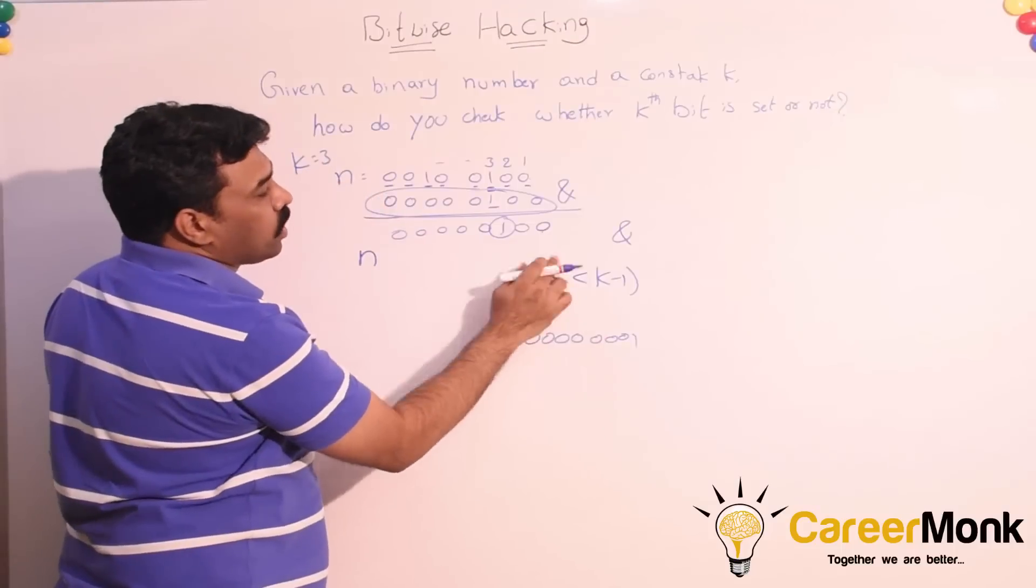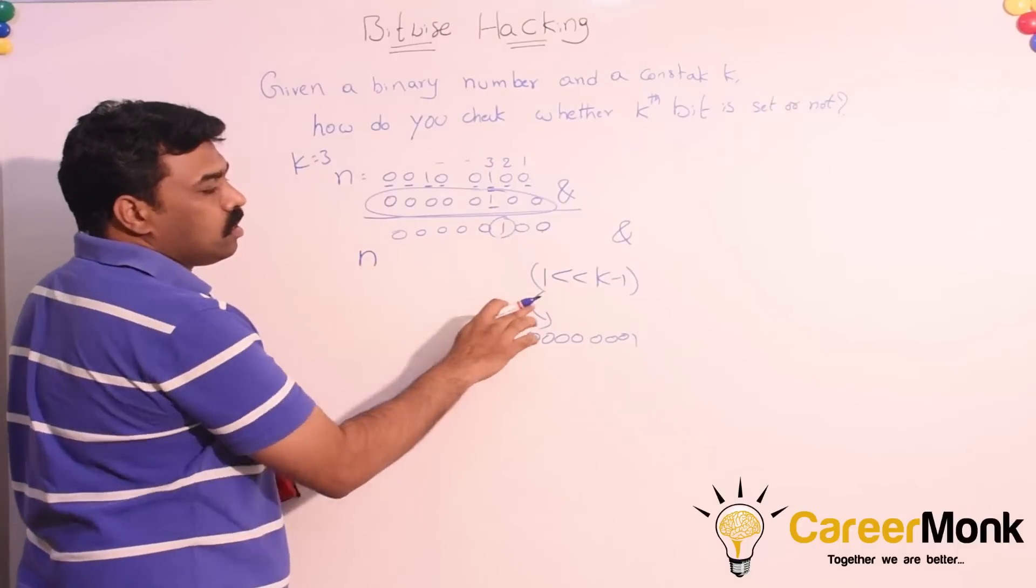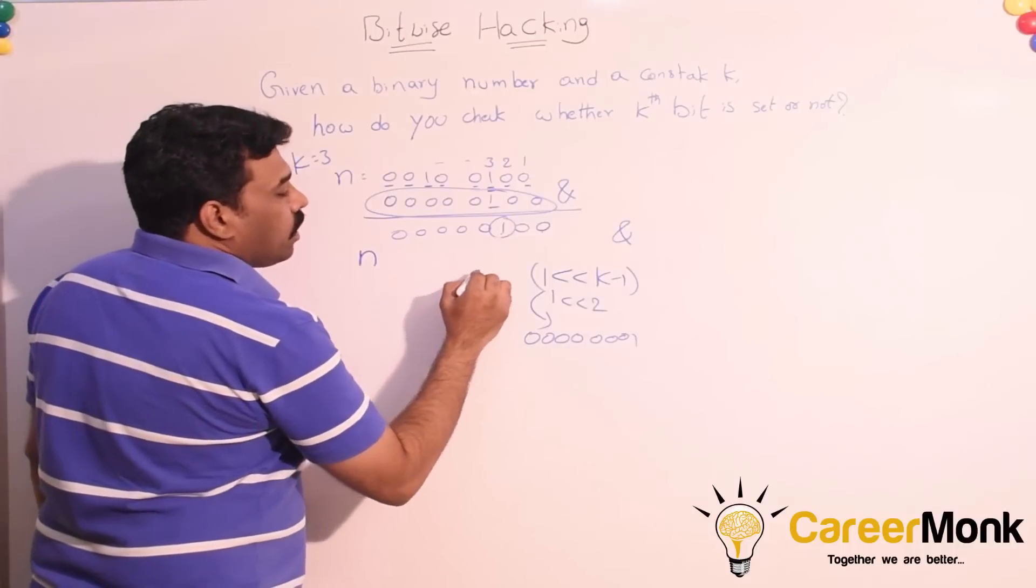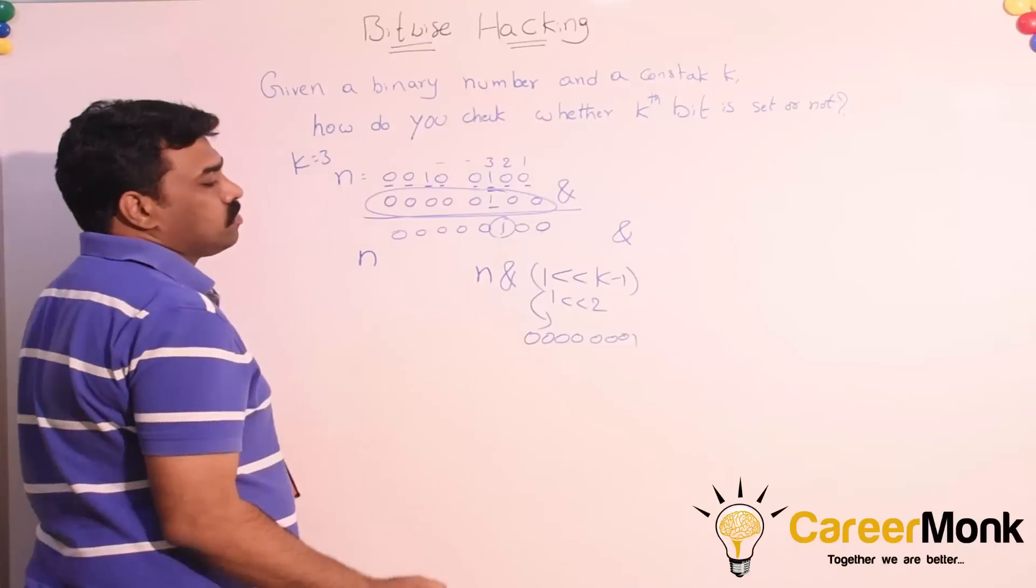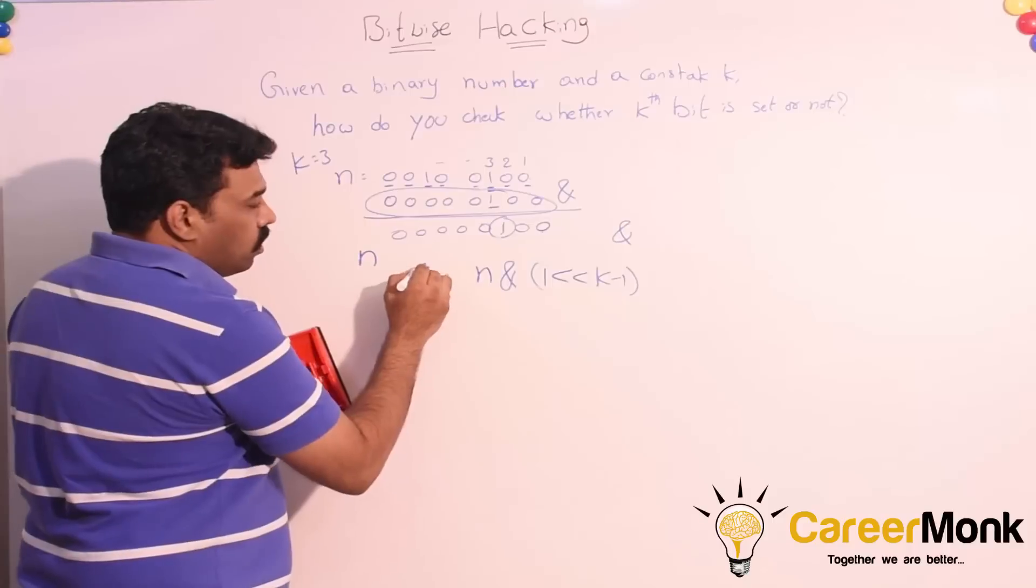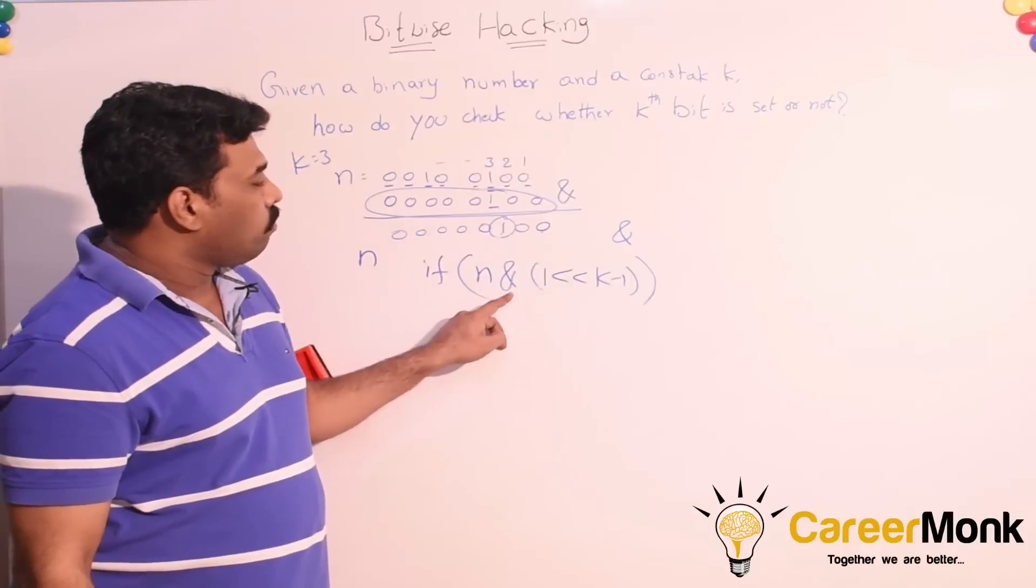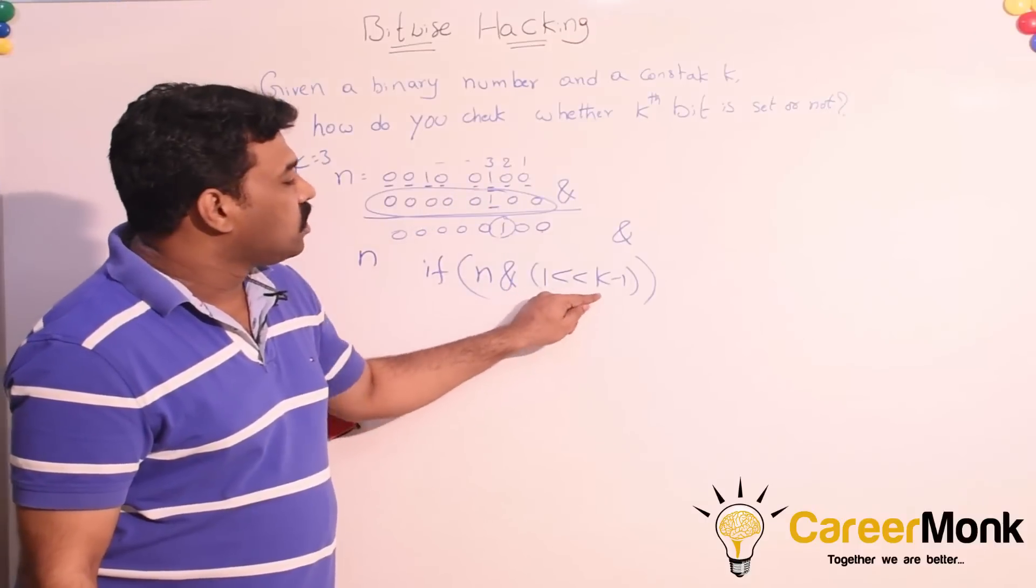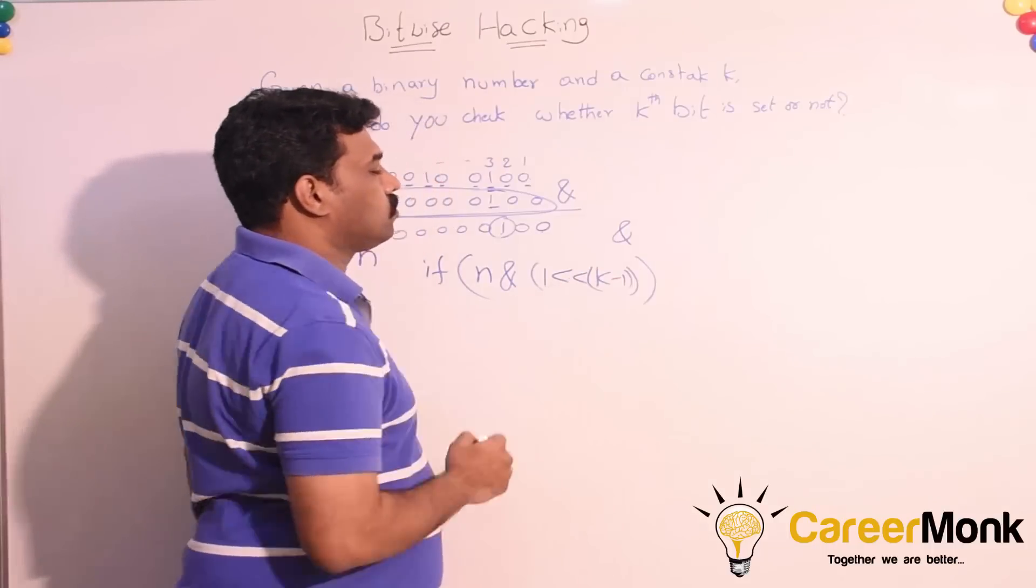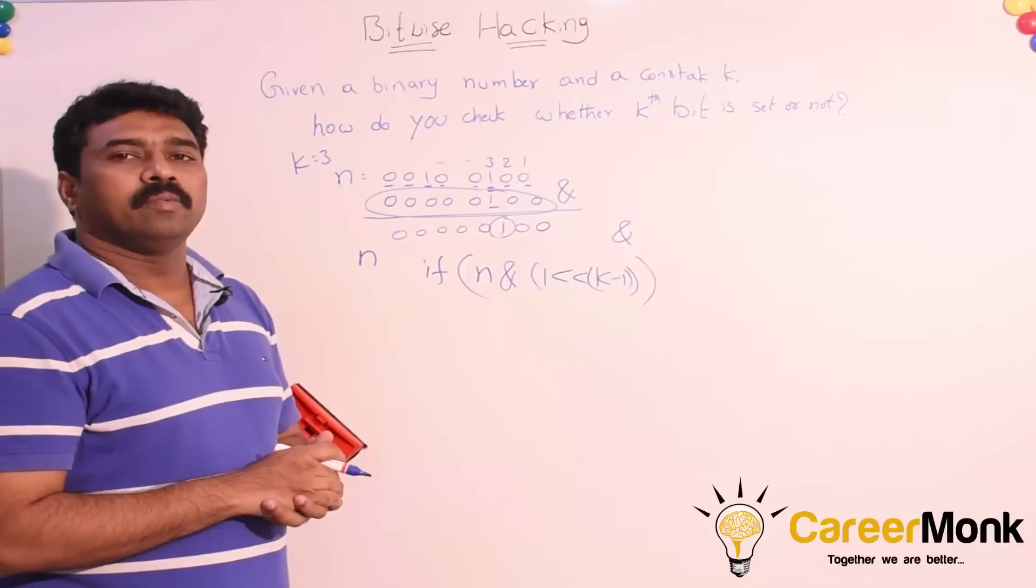If we perform k minus 1 times left shift, we will get whatever the value that we are seeing here. If k is equal to 3, we are performing 2 times. So that 1 will come first, in the first shift operation it will come here, in the next shift it will come here. So it is like 1 left shift 2 times, k minus 1 times. And that we are performing the bitwise AND operation on this one. So what I am going to say is, in the code if you put something like this: n bitwise AND with this constant, 1 left shift operation with k minus 1 times.